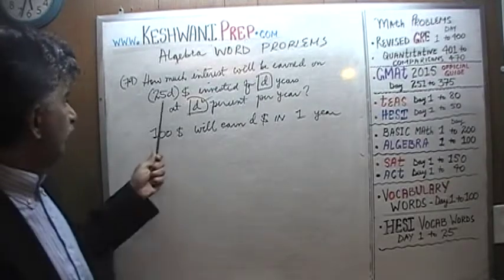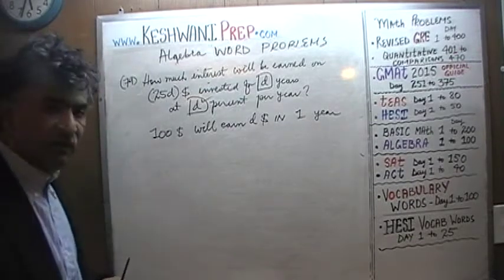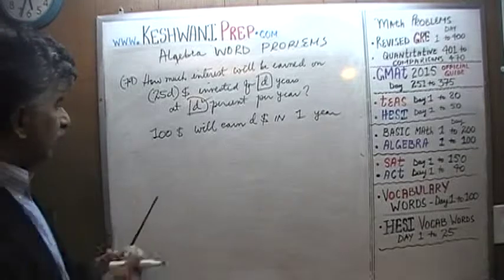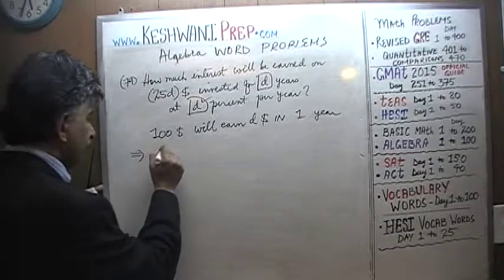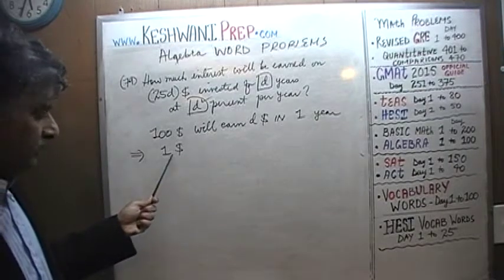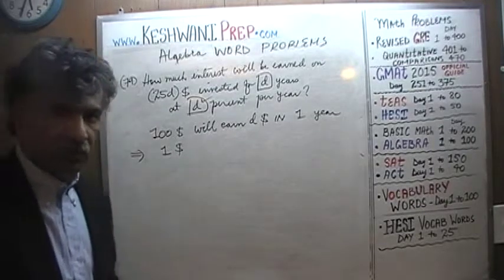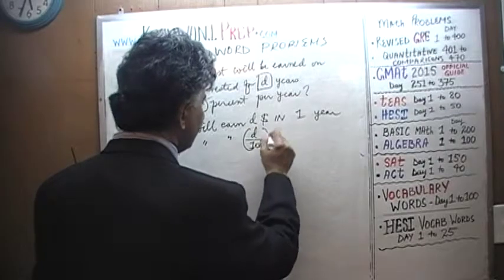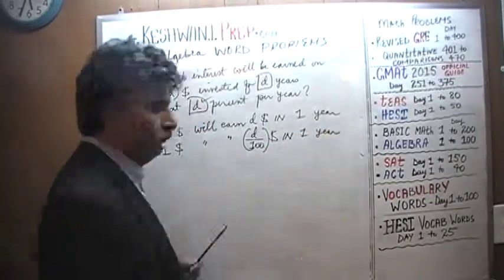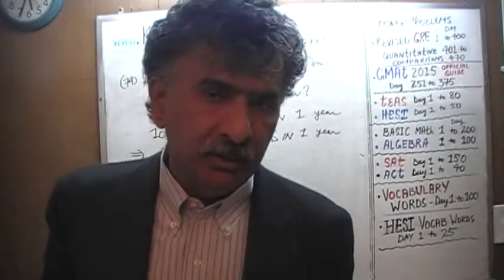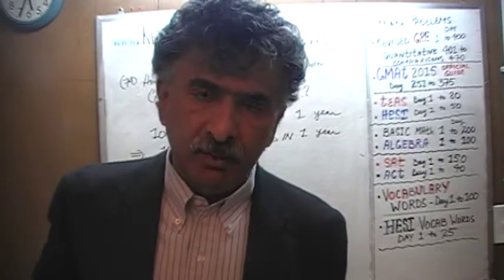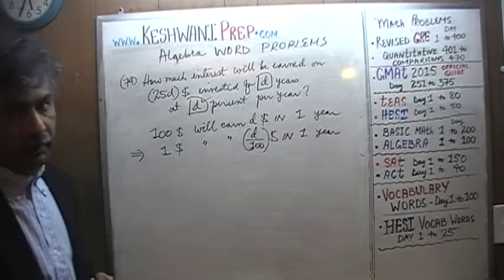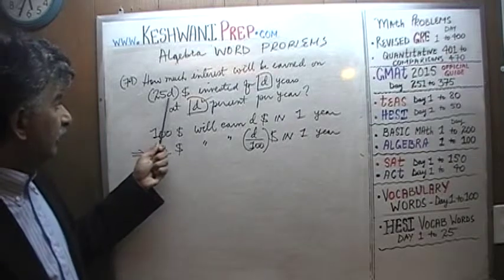We're not investing $100 — we actually want to invest 25 times D. But before we get to 25 times D, let's ask how much $1 will earn. If $100 earns D dollars, then investing one-hundredth of that amount means we earn one-hundredth of the interest. Instead of $100, we're investing only $1. In reality, we are investing 25 times D dollars.